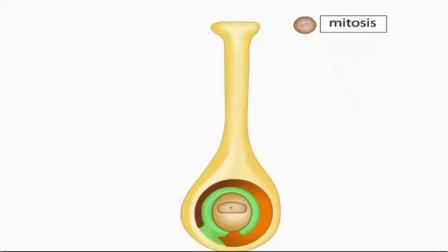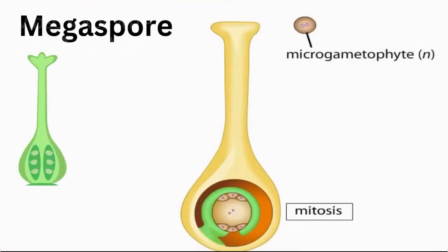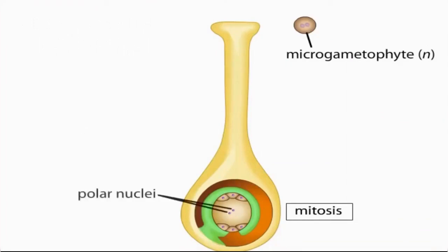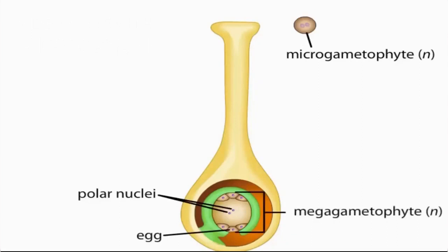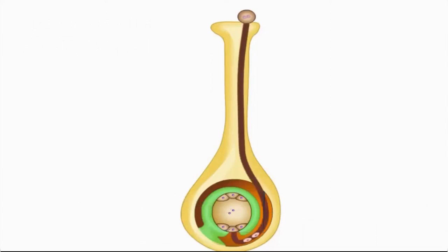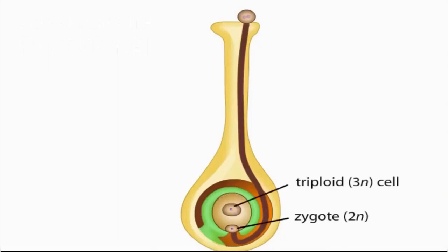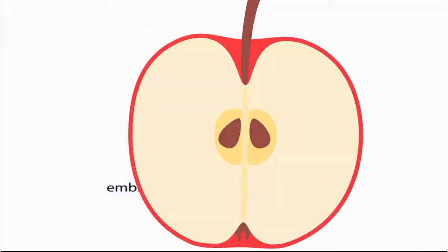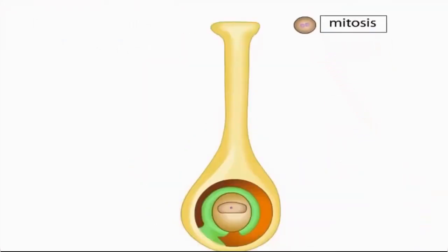Double fertilization: One female gamete unites with two male gametes. One male gamete fertilizes the egg, resulting in the formation of a zygote (syngamy), and the other unites with two polar nuclei for the formation of endosperm (triple fusion). Thus, double fertilization equals syngamy plus triple fusion. The triploid nucleus divides to form endosperm, which provides nourishment.